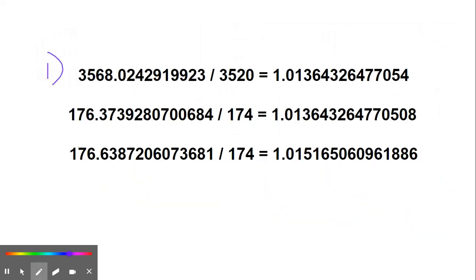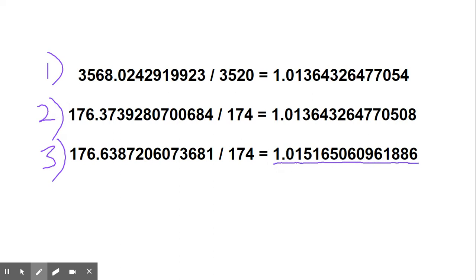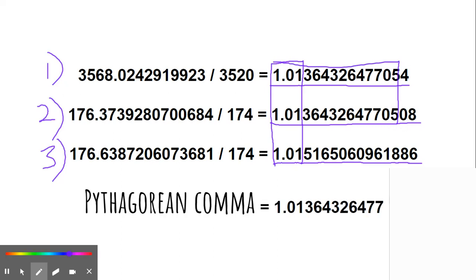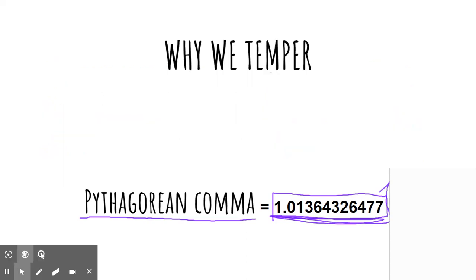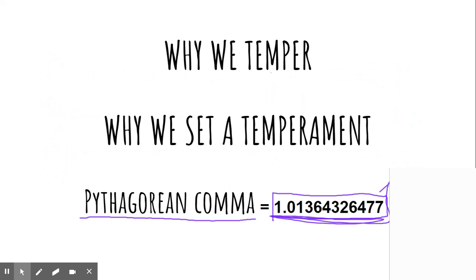So these are the three equations we've done today. The third is most different because I used a repeating decimal rounded off. The top two are slightly different due to rounding, but the core value is the same — that is the Pythagorean comma. The Pythagorean comma is why we temper. When we set a temperament, we take that comma and spread it out throughout the octave. That's why many intervals on a piano might not always sound perfectly in tune — because they're not — but our ears are so used to equal temperament that we accept it as being in tune.